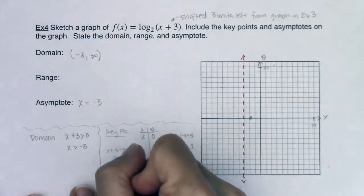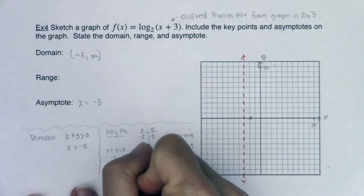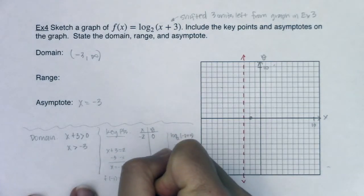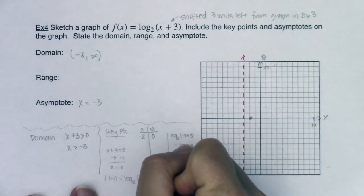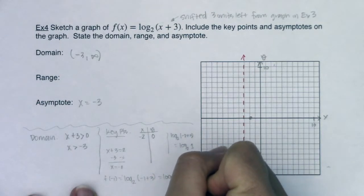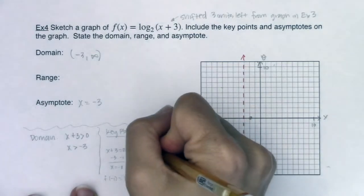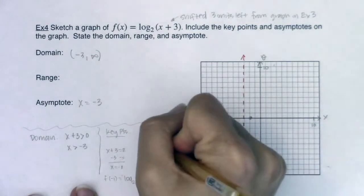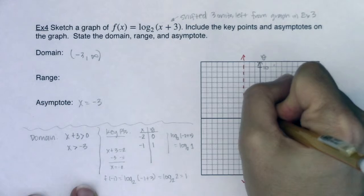Okay, here we go. If x is negative 1 and I want f of negative 1, that's going to be log base 2 of negative 1 plus 3. That would be log base 2 of 2 and that would be equal to 1. That's what I was trying to say. If I plug negative 1 in, I get 1 back out.